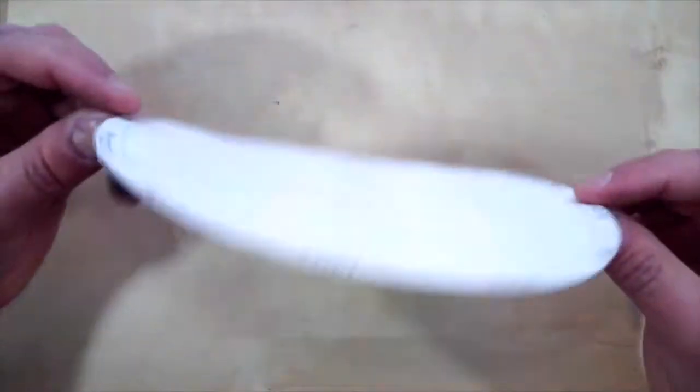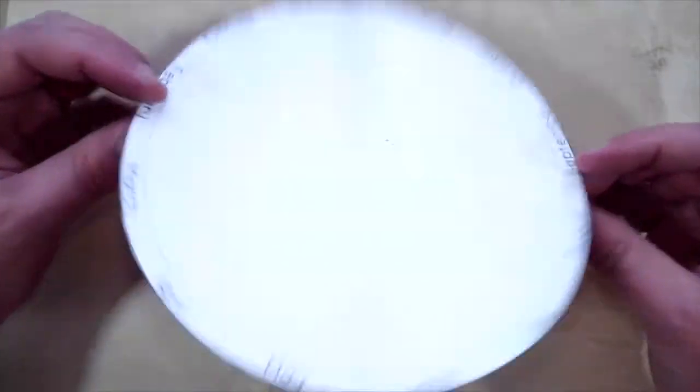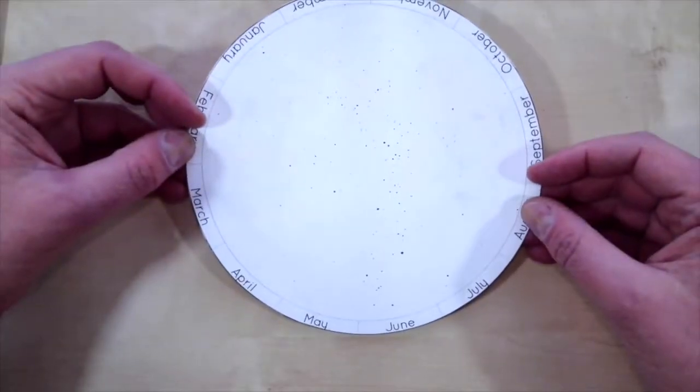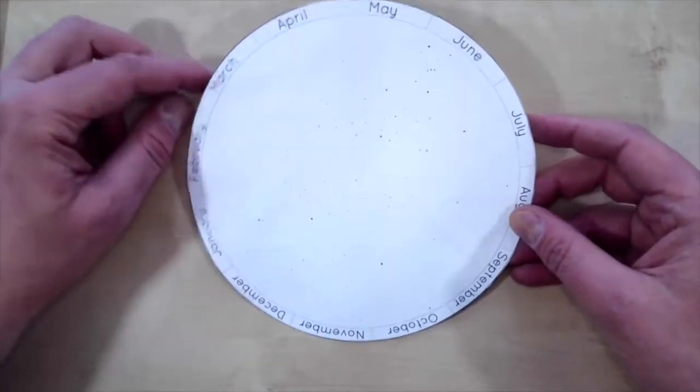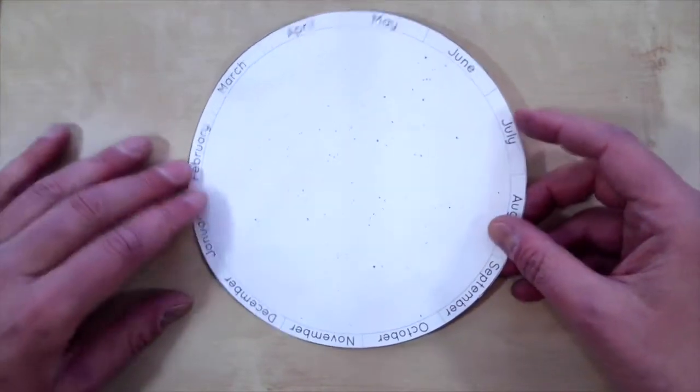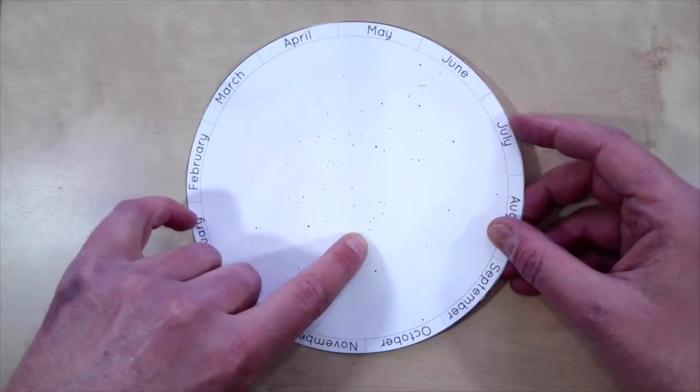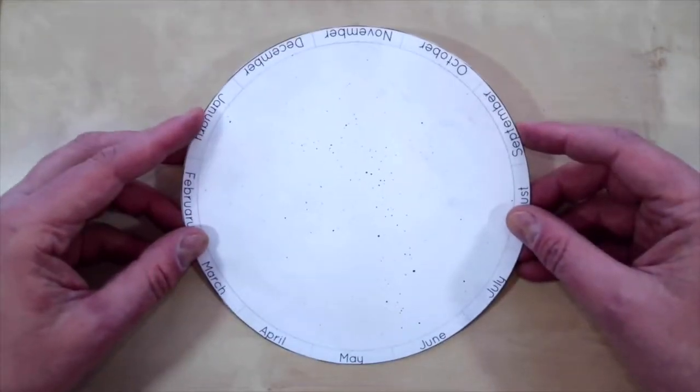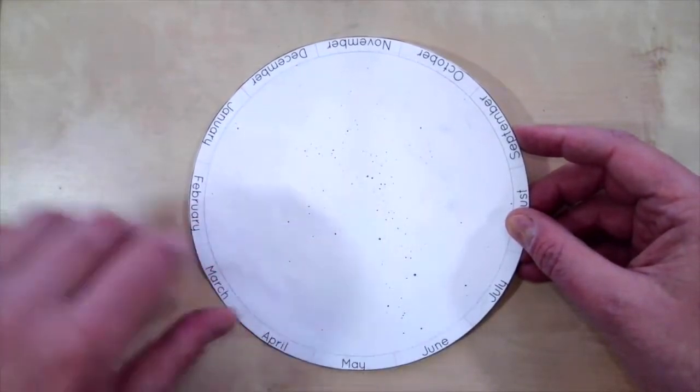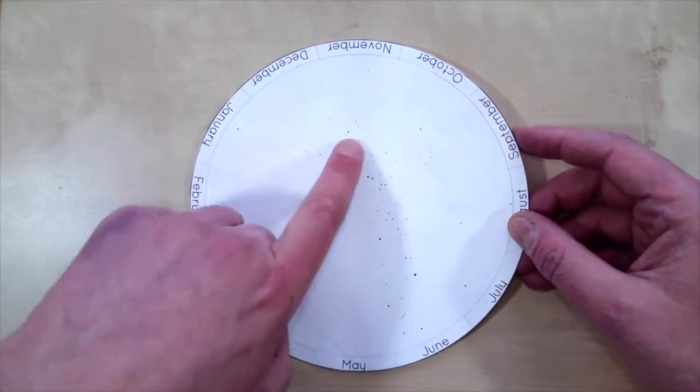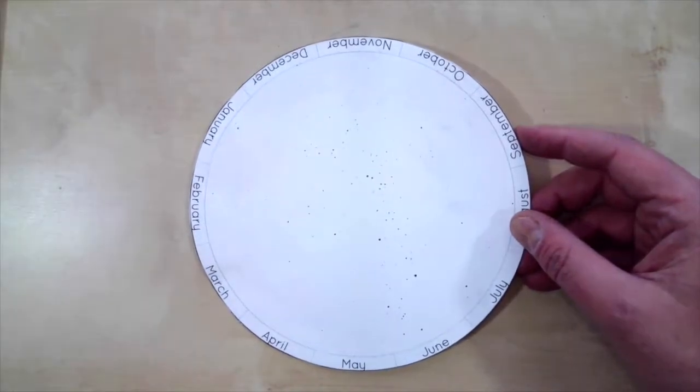If you squash a celestial hemisphere flat, if you take a globe of stars and press it flat, you might get something like this: a double-sided disk with the two hemispheres of stars on opposite sides. This is the northern hemisphere of stars, or the north celestial hemisphere. There's the North Star right in the middle, there's the Big Dipper, there's Cassiopeia. And on the other side we have the southern hemisphere of stars. These stars in the middle are those that we never get to see living here in the northern hemisphere of Earth. There's Sagittarius and Scorpius there.